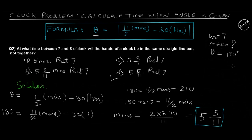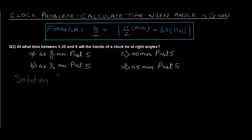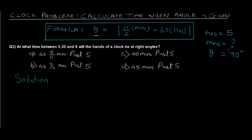Question 3: At what time between 5:30 and 6 will the hands of a clock be at right angles? The time is between 5:30 and 6, so hours = 5 and we still need to find the minutes. The angle is clearly stated as a right angle, which is 90 degrees. We need to find the time when the angle between the hands is 90°.